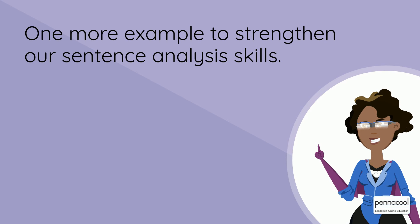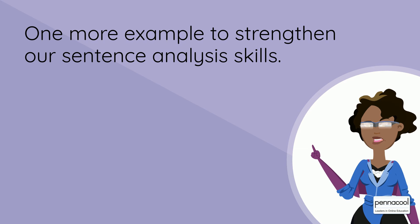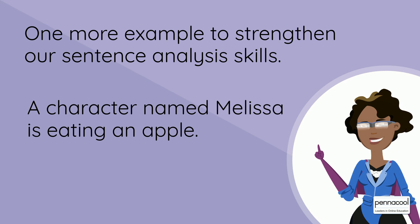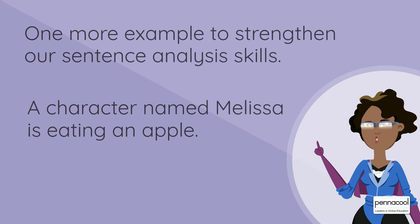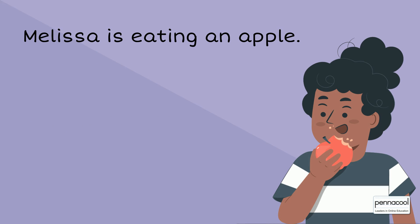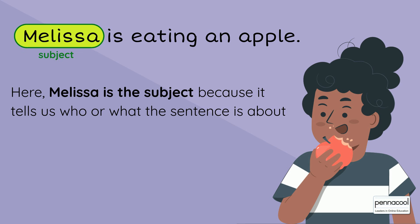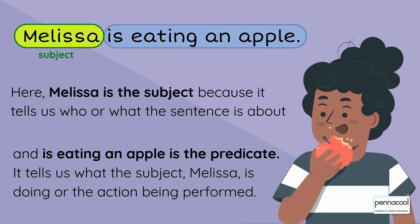One more example to strengthen our sentence analysis skills. A character named Melissa has eaten an apple. In the sentence 'Melissa is eating an apple,' Melissa is the subject because it tells us who or what the sentence is about, and 'is eating an apple' is the predicate. It tells us what the subject Melissa is doing, or the action being performed.